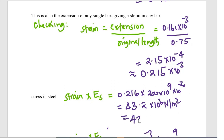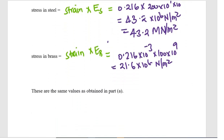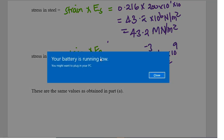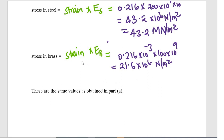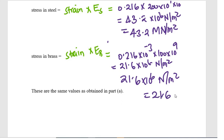Proceeding with the stress in brass: since both components are subjected to the same load and have the same length, they share the same strain and the same extension. Stress in brass equals the modulus of elasticity of brass times the common strain, giving 21.6 × 10⁶ N/m², or 21.6 MPa. These values match those obtained in Part A, confirming our answers are correct.